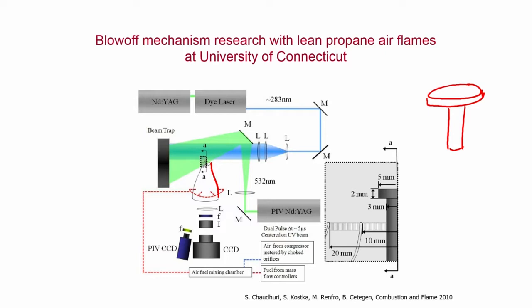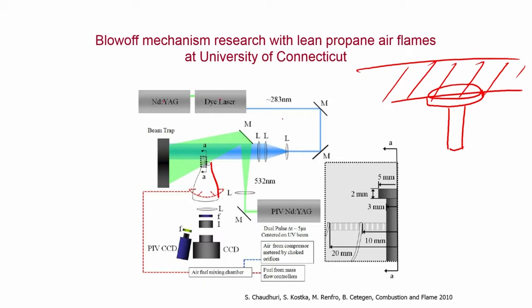Premixed fuel mixture is sent into the nozzle after the fuel and air are mixed in a mixing chamber. A laser sheet is passed through the mid-plane of the bluff body. An Nd:YAG laser pumps a dye laser, whose output passes through a doubling crystal to produce 283 nm wavelength light, which is reflected through mirrors and sheet optics to create the PLIF laser sheet.